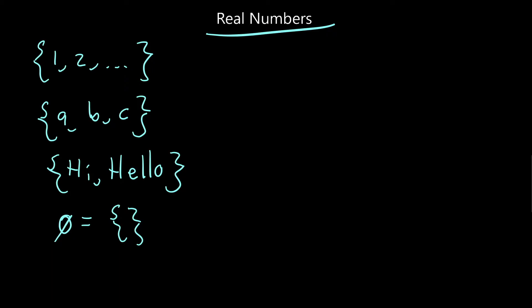A set by itself is useful and interesting, but for our purposes it's not entirely enough. We want to introduce a structure on the set. There are a lot of potential structures we can be concerned with — you've got groups, rings, etc. — but that's covered in the field of maths known as abstract algebra. For us we're really just concerned with one particular structure known as a field. A field is a structure with two operations: you have the set itself, an addition operator, and a multiplication operator.